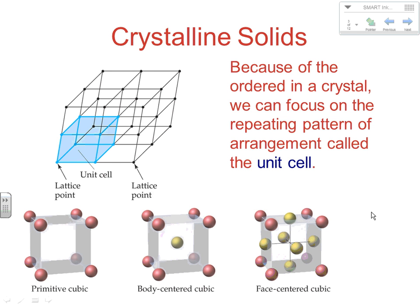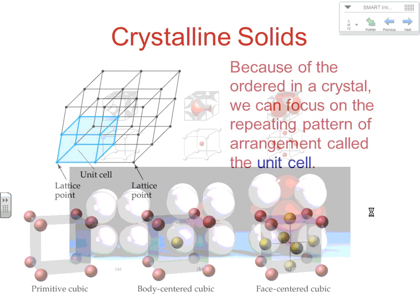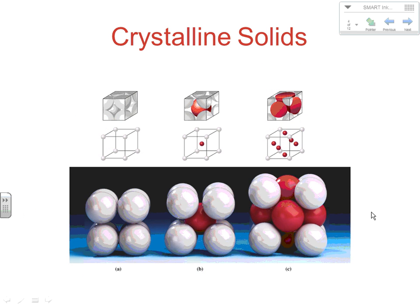There are primarily three fundamental types of unit cell: the primitive cubic, the body-centered cubic — where there's one at each corner and then one in the middle — and the face-centered cubic — where you have one at each corner and then one on each face. These are the fundamental ways in which the simplest pattern gets created and then repeated again and again throughout the crystalline solid.